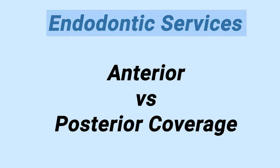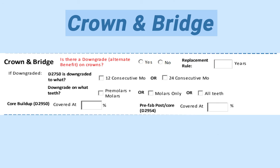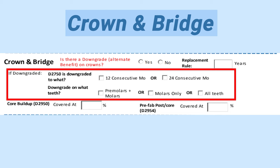For endodontic services, some insurances have different coverage percentages for anterior teeth versus premolars and molars, so make sure that's filled out. For crown and bridge, make sure to find out if there's a downgrade. Most insurances will downgrade D2750 to a D2790 or D2792. Insurances may downgrade all posterior teeth or only the molars, so make sure that's recorded correctly.